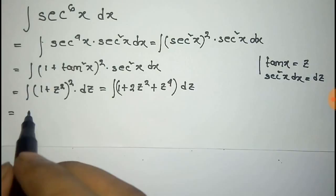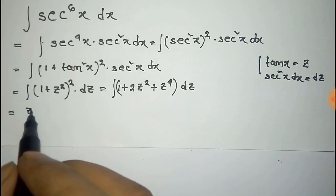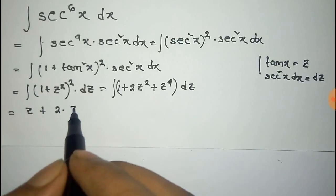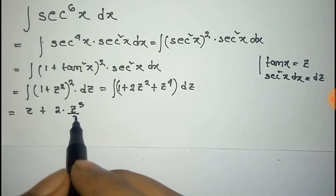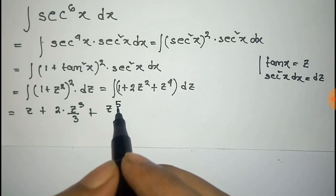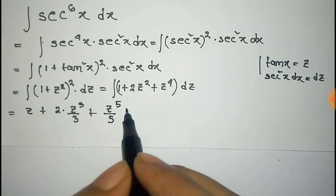Now we can integrate easily. The integration of 1 is z, integration of z^2 is z^3 by 3, plus the integration of z^4 is z^5 by 5 plus a constant c.